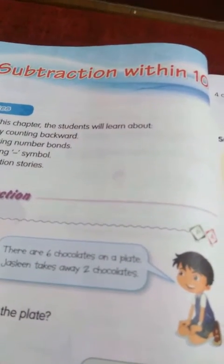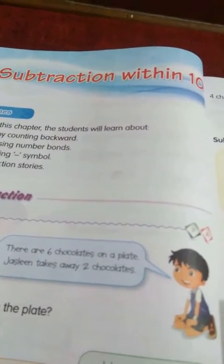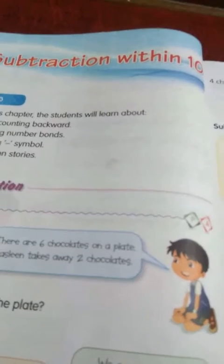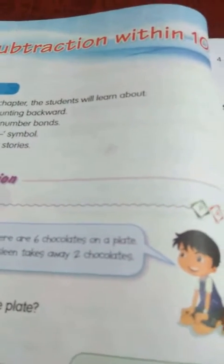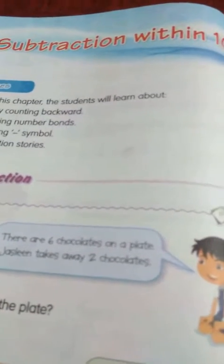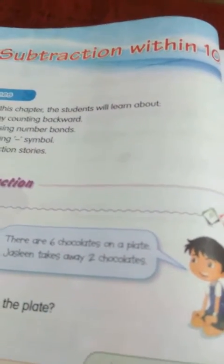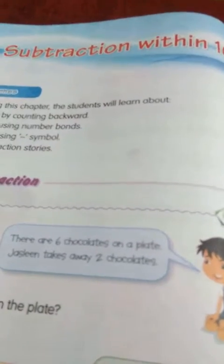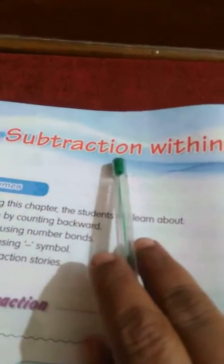Matlab us me se hum log nikalte hai. Addition me kya karte hai? Addition me hum log jodte hai. Is me hum log jo cheese kuch bhi rhega, chocolates rhega. For example, aapke paas dho apple hai. Dho apple mein se aapne ek apple kha liya. To aapke paas kitna bachta hai? Only one apple. Yeh jo bachta hai, aapke paas kitna rhega — yeh sab hum log jo word use karte hai, us ko hum log subtraction me use karte hai.